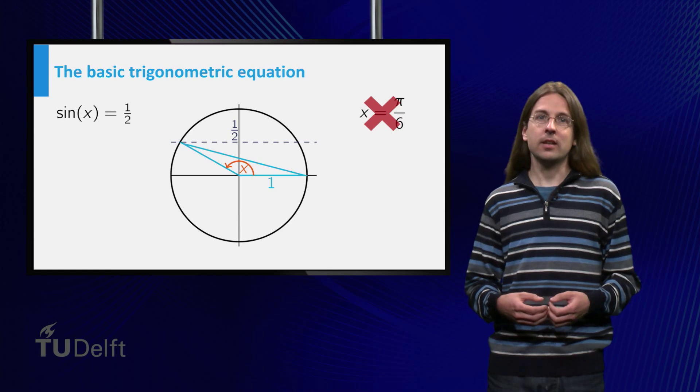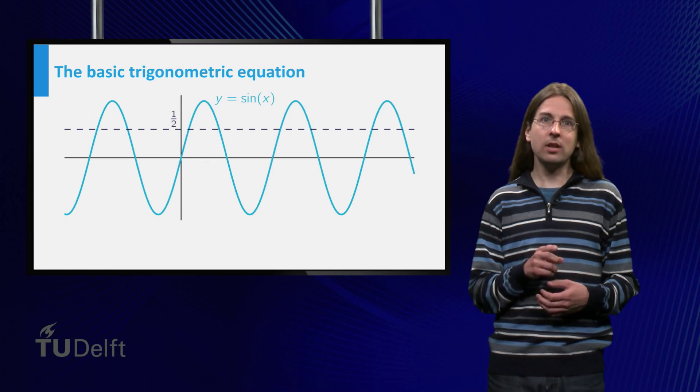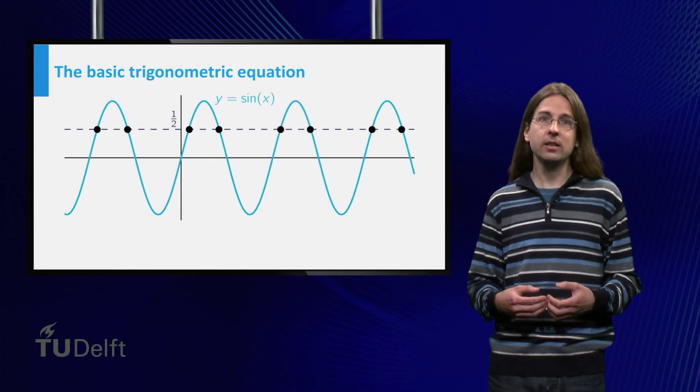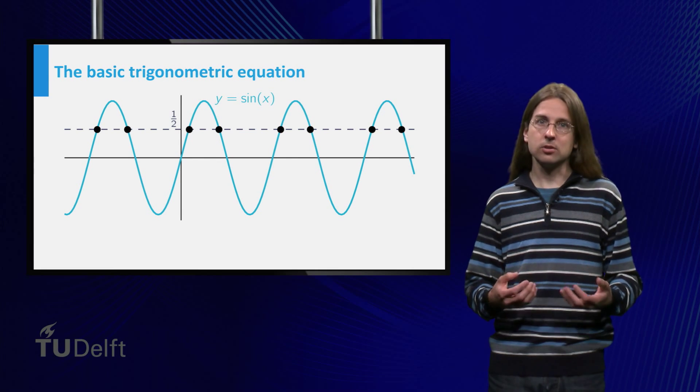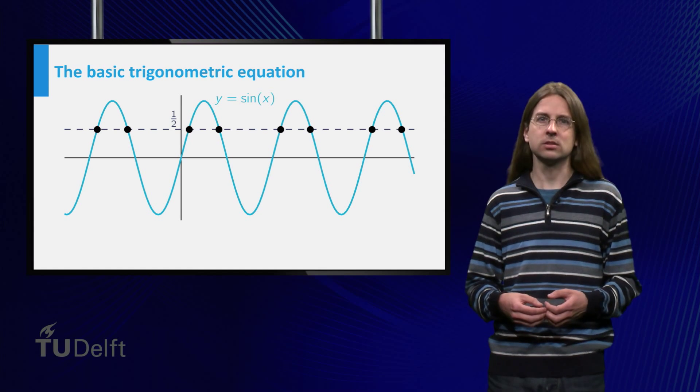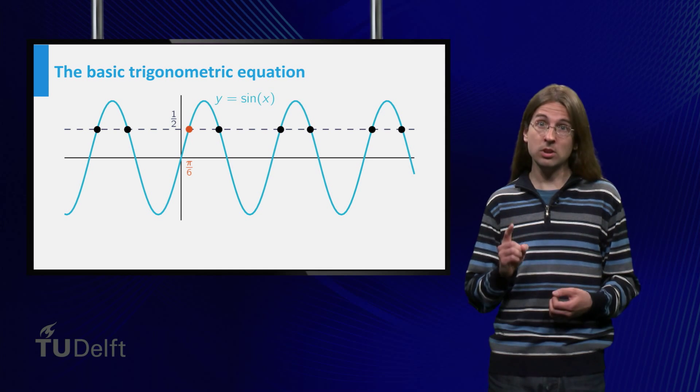Let us look at the graph of sin(x). We add the horizontal line at y = 1/2. The intersections of this line with the graph of sin(x) are the solutions to the equation sin(x) = 1/2. We see that there are many solutions. π/6 is just one solution.